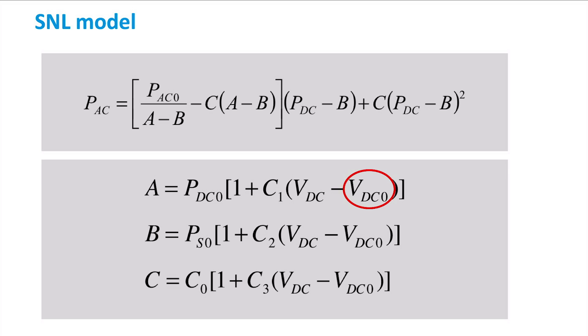These are C0, which, as we saw before, takes into account the curvature of the characteristic, C1, C2, and C3 that are purely empirical parameters.